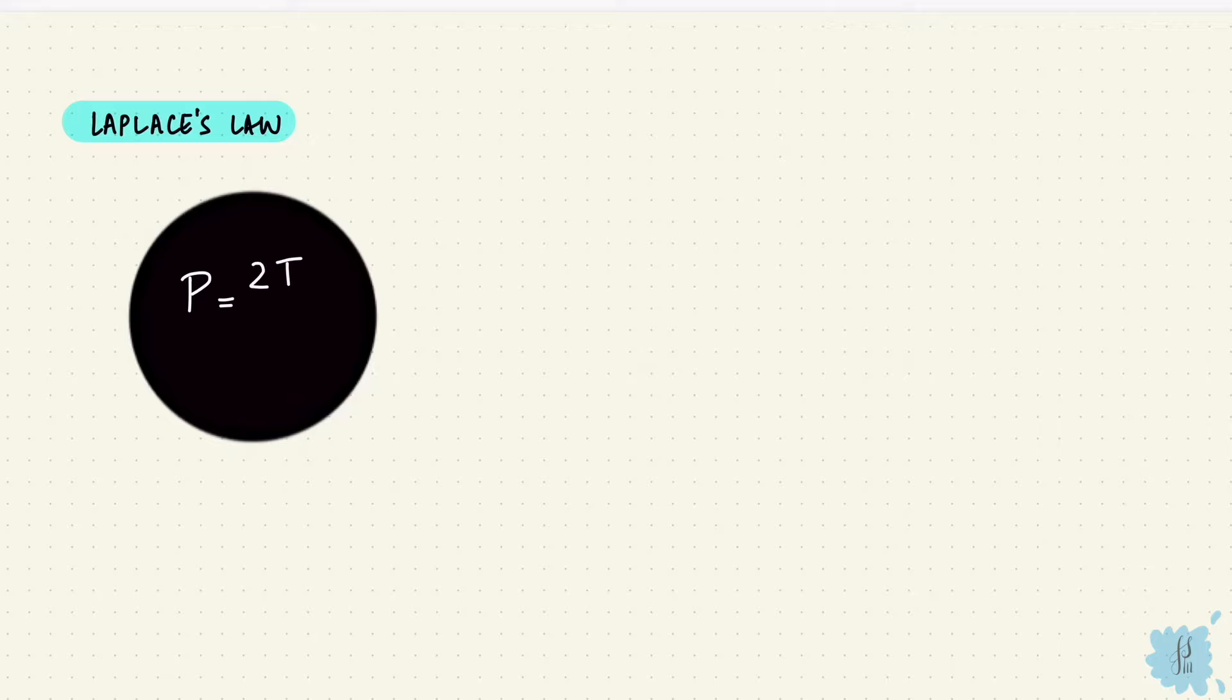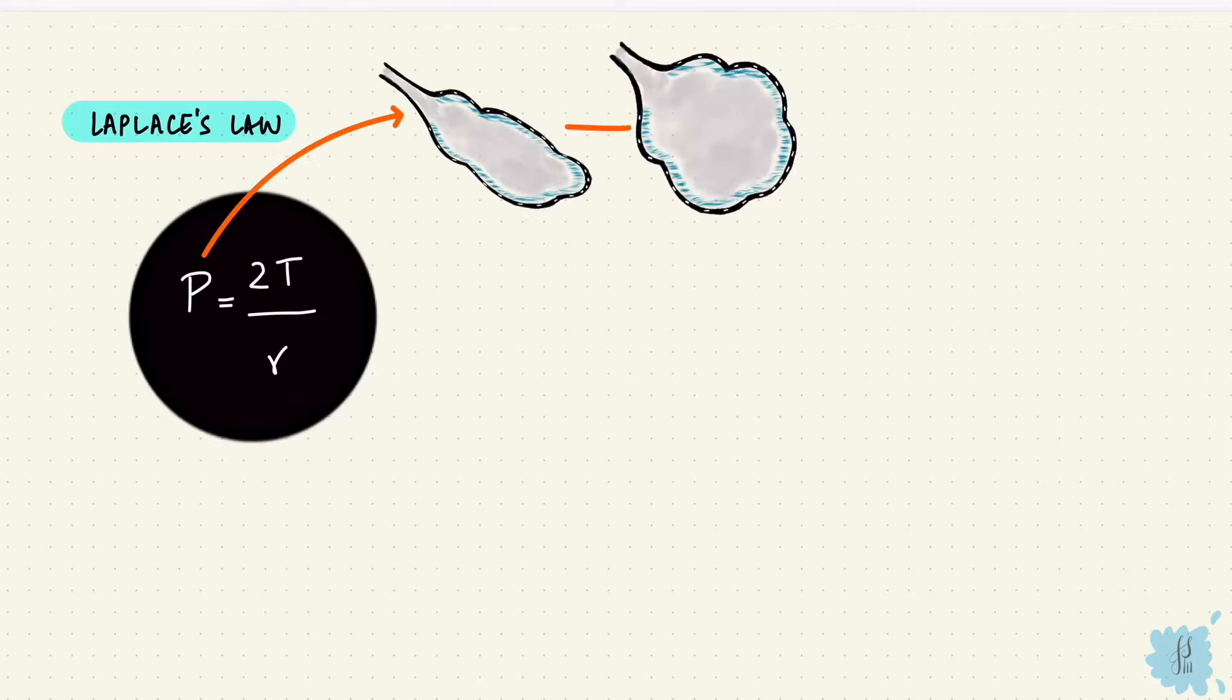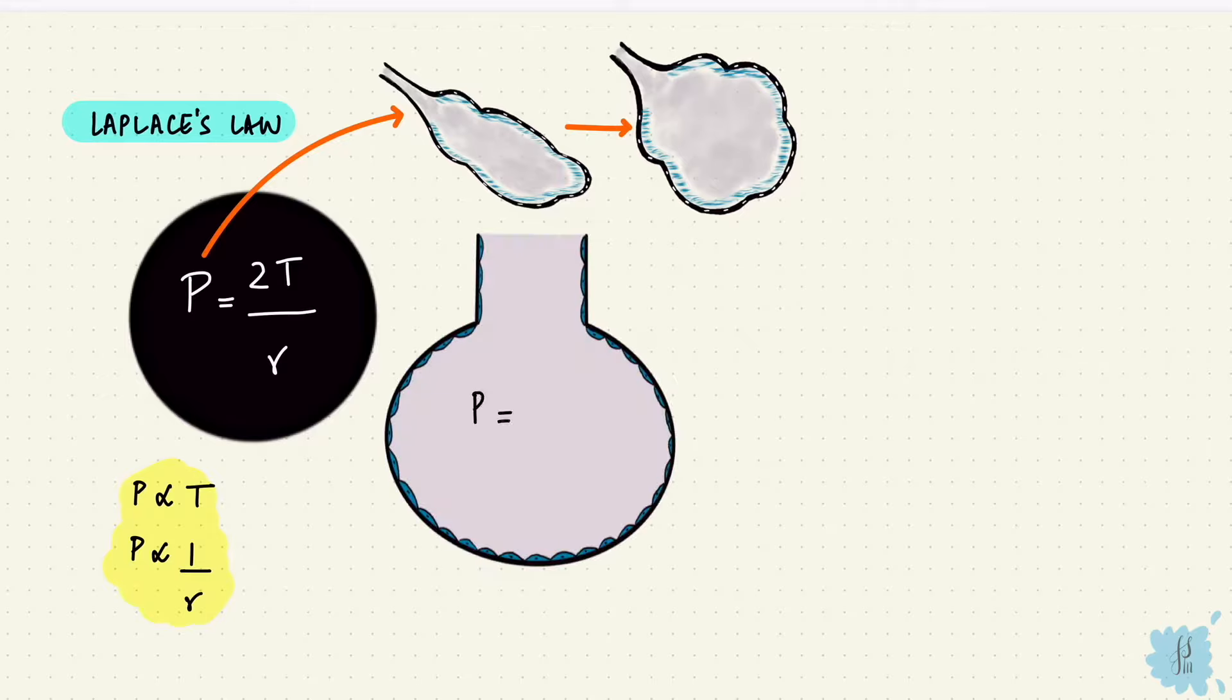Laplace's law for a sphere is that the pressure is twice the surface tension over the radius. This is the pressure that keeps the alveolus open and is proportional to the surface tension and inversely proportional to the radius. So that means if there's a high radius or a big alveolus, then less pressure is needed. It doesn't collapse easily.